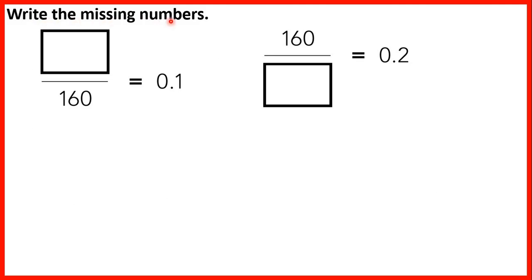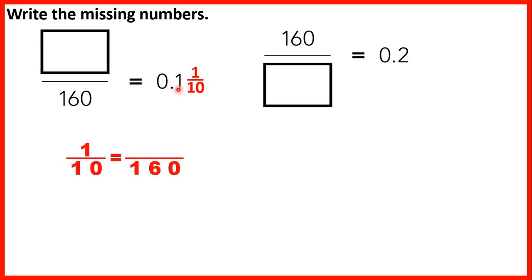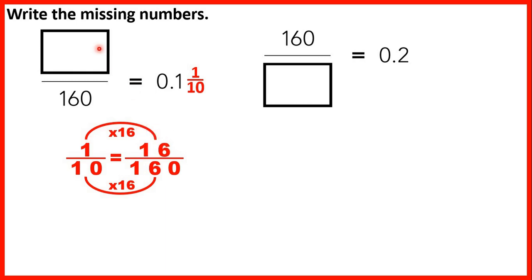We need to write the missing numbers. First, what is the numerator in a fraction with a denominator of 160, if the fraction equals 0.1? Since 0.1 is one-tenth, we need an equivalent fraction to 1/10 with a denominator of 160. Since 10 times 16 is 160, we multiply the numerator by the same factor: 1 times 16 is 16. So the numerator is 16.